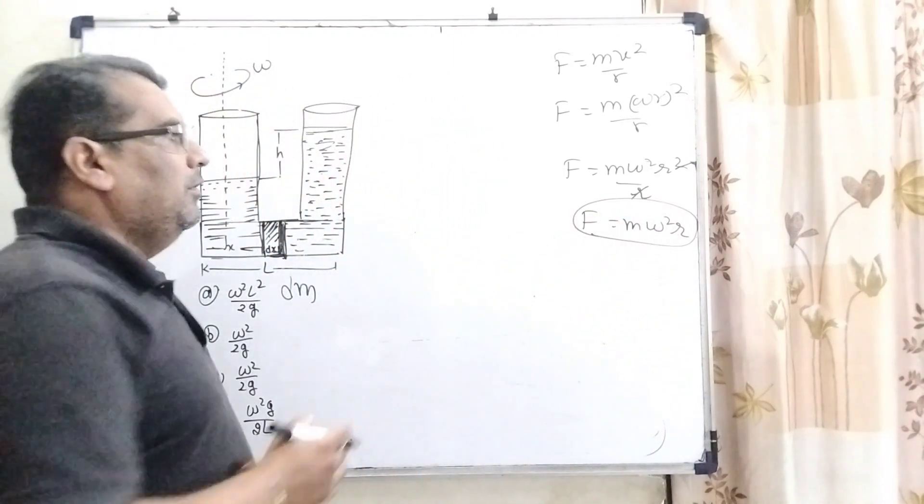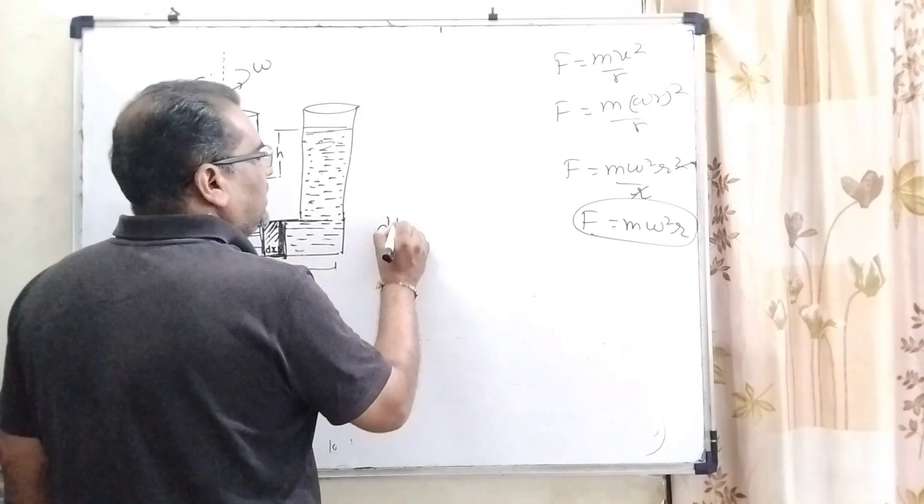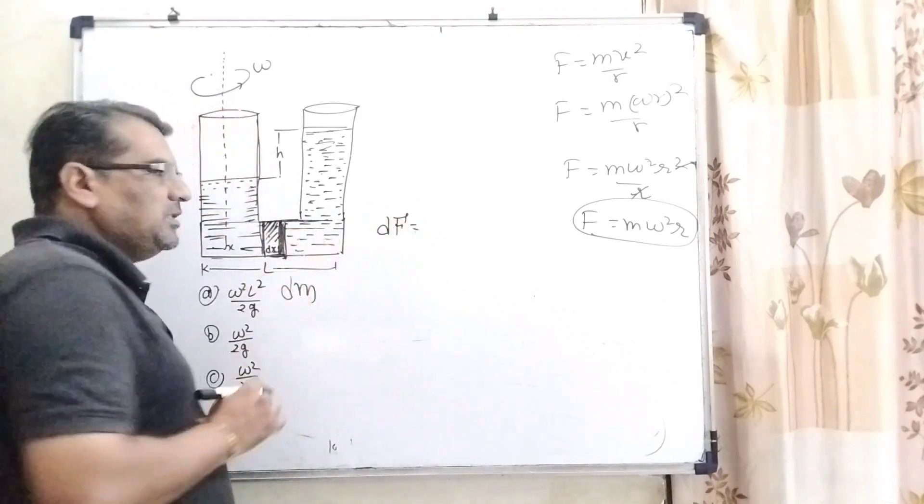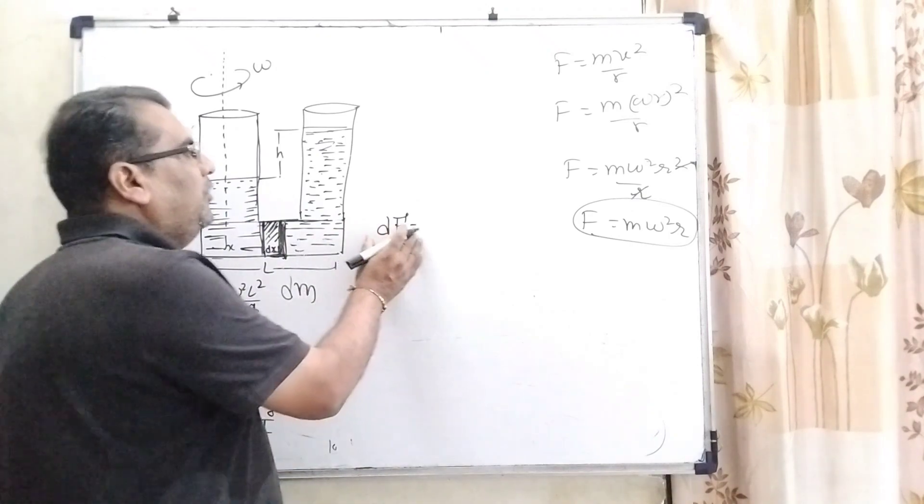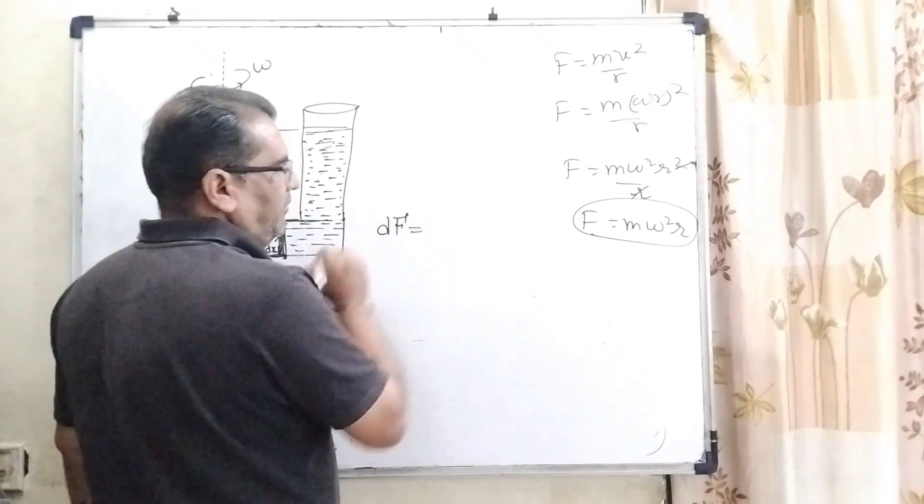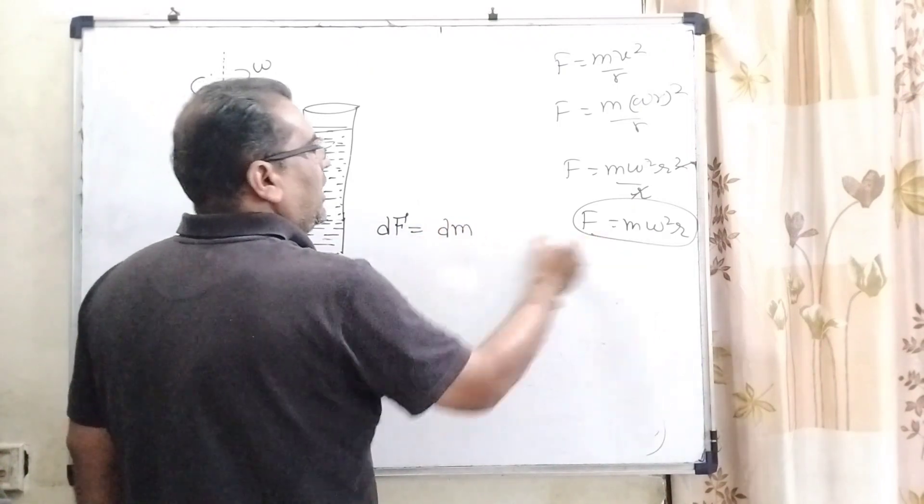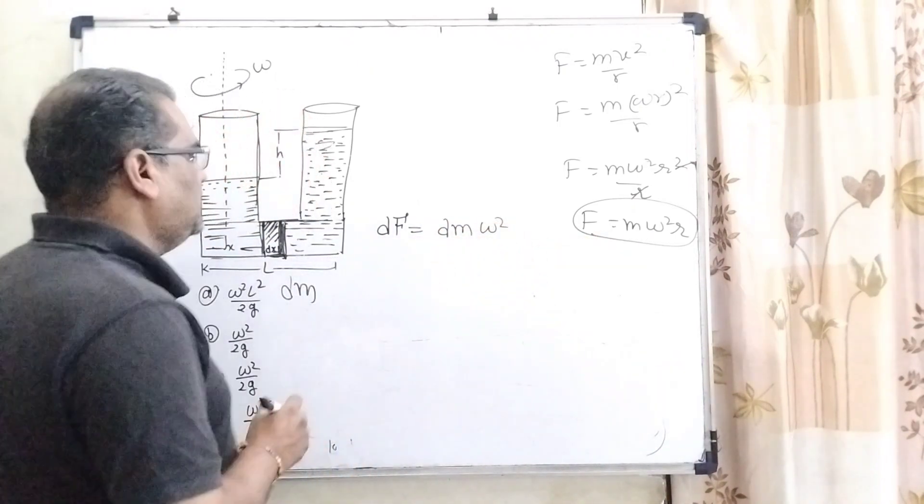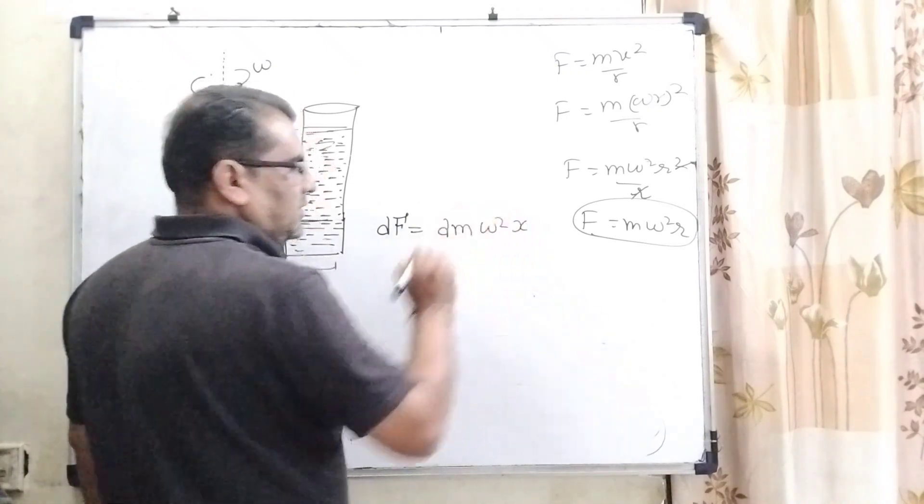Now, we are using this concept for this mass element. So here, centripetal force - let us consider dF because it is a mass element, so a small amount of force will be applied on it. And mass is dm, omega square, and the distance from this end is x. So here we have written x.